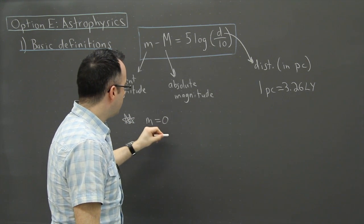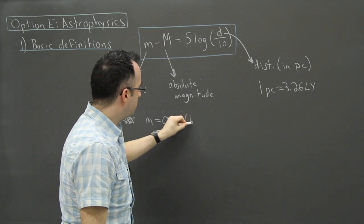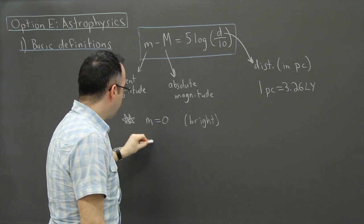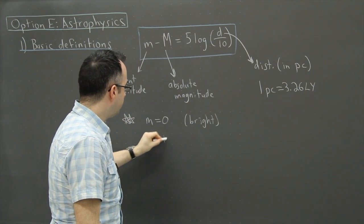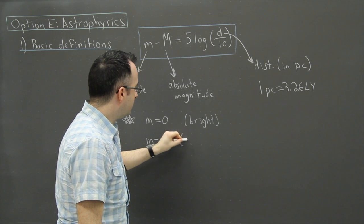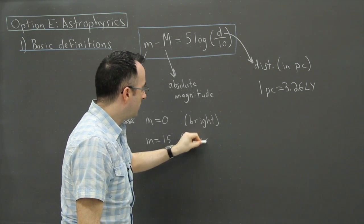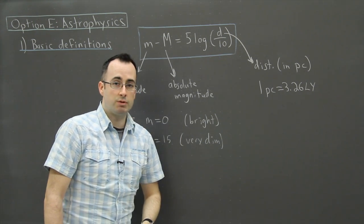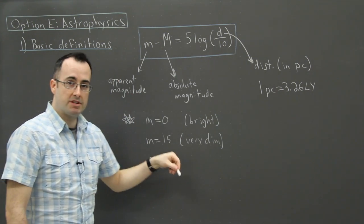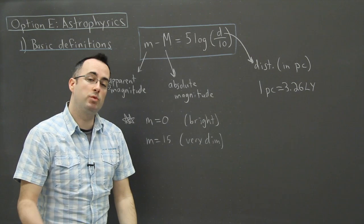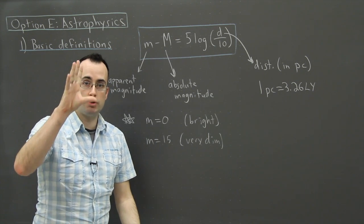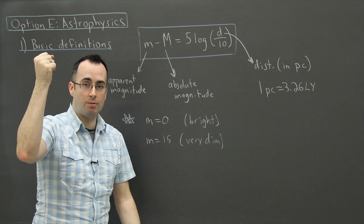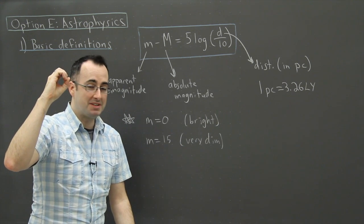In other words, something that has m equals zero is very bright, whereas something that has an m value of, let's say 15, is actually very dim. You'd probably barely be able to see something that has a magnitude of 15. So it's really weird that it works sort of opposite to what you'd think. It was originally set based on the objects that you'd see in the sky. So if we saw something really bright in the sky, well, then they set that at zero. And the problem was, then they found brighter things in the sky.